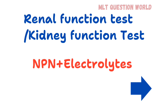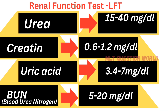Next is renal function test, or kidney function test. Here we have non-protein nitrogenous substances plus electrolytes detected. Urea normal value is 15 to 40 milligram per deciliter. Creatinine is 0.6 to 1.2 milligram per deciliter. Uric acid is 3.4 to 7 milligram per deciliter. BUN, or blood urea nitrogen, is 5 to 20 milligram per deciliter.